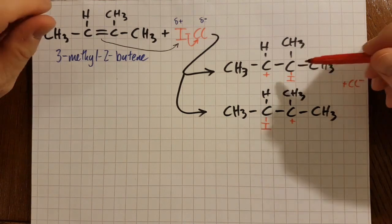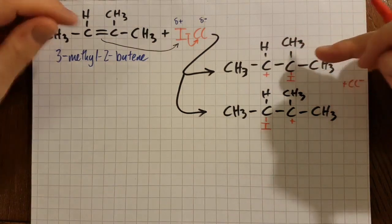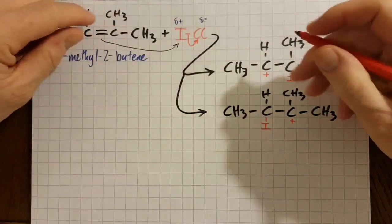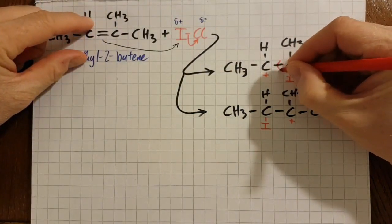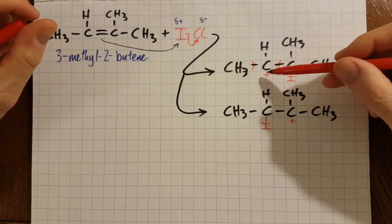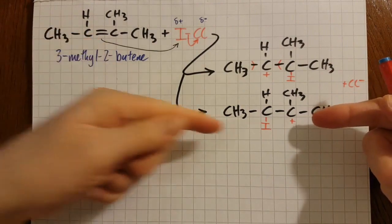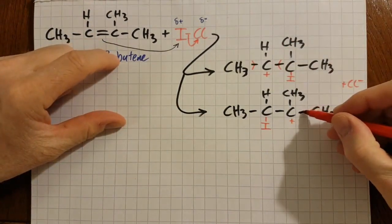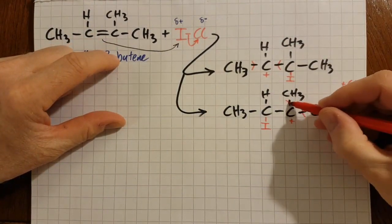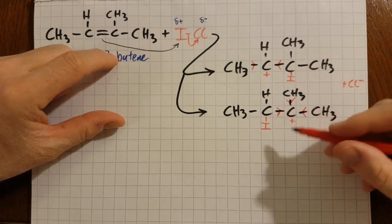So one of these is the more stable configuration. Let's work out which one. There's my positive charge and I have two alkyl groups—this one and that one—pushing in electrons to stabilize it. But looking down here, you've noticed that there's three alkyl groups—this one, that one, and the one on top. So this would be a tertiary carbocation, and that's the most stable carbocation that you can have.